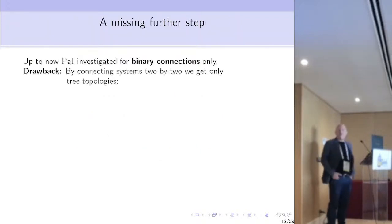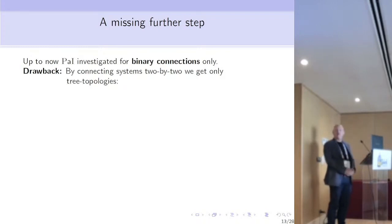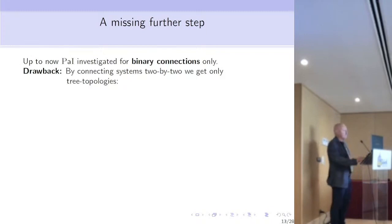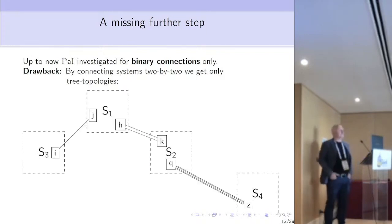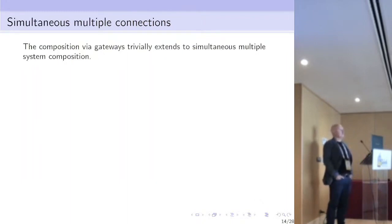Now there is a missing further step, because up to now only the connection of two systems via single interfaces has been investigated. This has a drawback: by connecting systems two by two we get at the end a whole system with a tree topology, so we are missing the investigation of simultaneous multiple connections.